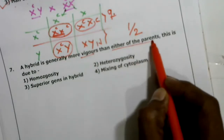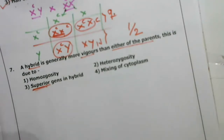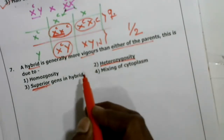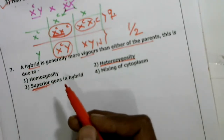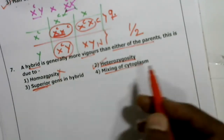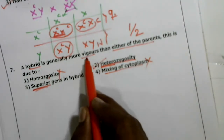Seventh question: a hybrid is generally more vigorous than either of the parents — this is due to heterozygosity. When two superior organisms are crossed, they produce a heterozygous organism. Because of this heterozygosity, the hybrid has desirable characters. Homozygosity cannot produce vigorous hybrids. Mixing of cytoplasm is known as plasmogamy — that is also not correct. Heterozygosity is responsible for production of a more vigorous hybrid. The second option is correct.